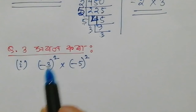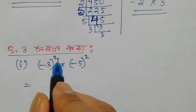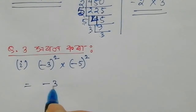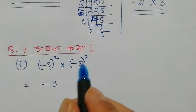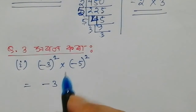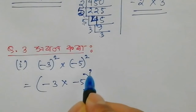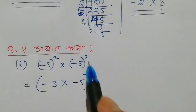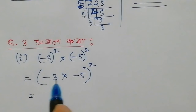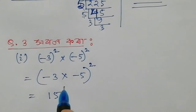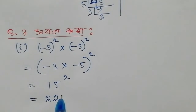Question 3: the question is minus 3 squared into minus 5 squared. If you have 1 power, you can have minus 3. So minus 3 to minus 5, you can have positive 15 squared. So we can have negative 2 squared, which equals 25.